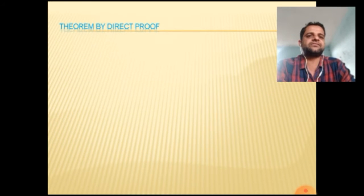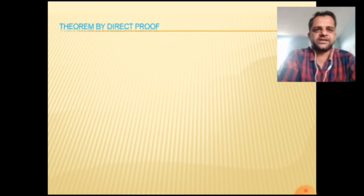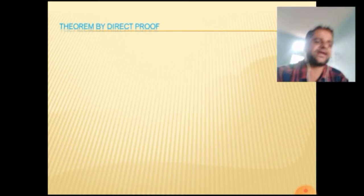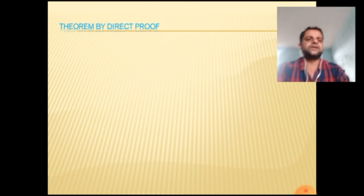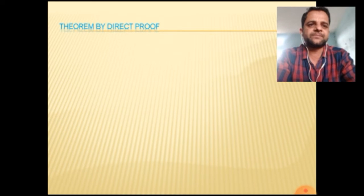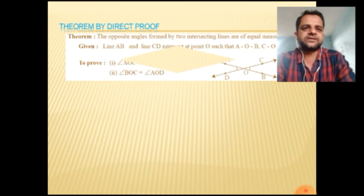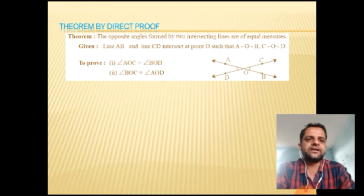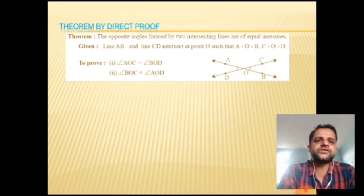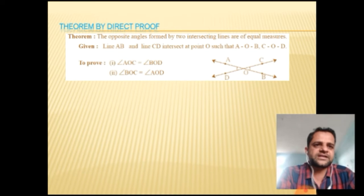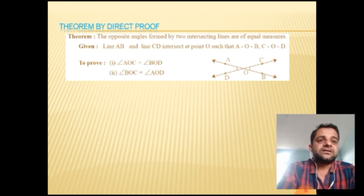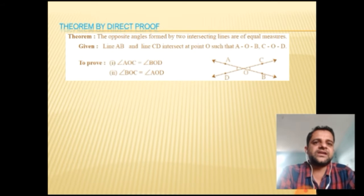Now we take an example of a direct proof. The theorem states: the opposite angles formed by two intersecting lines are of equal measure.